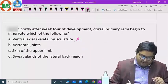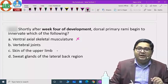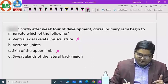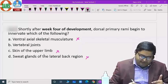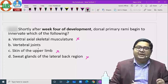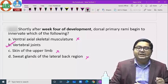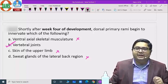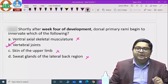Among these options, ventral will not be supplied, upper limb will be taken care of by the ventral ramus, the lateral back region sweat gland will also not be supplied by the dorsal ramus. The vertebral joints will be supplied by the dorsal ramus. That is our answer.